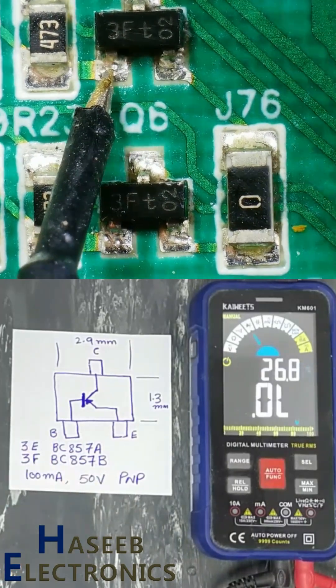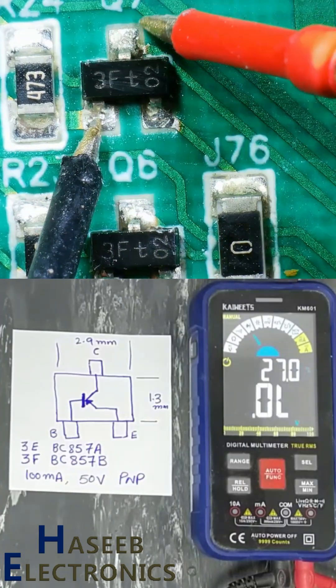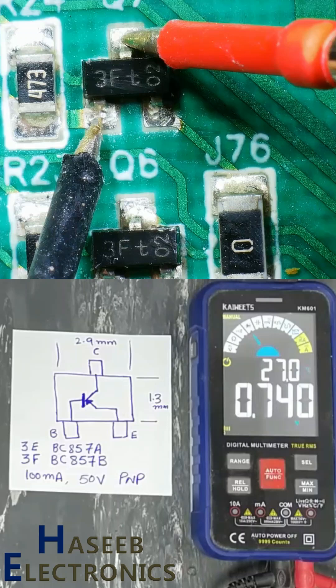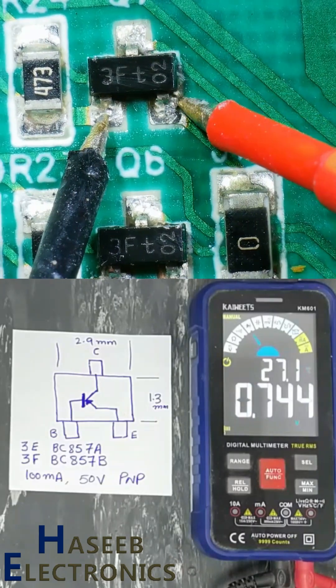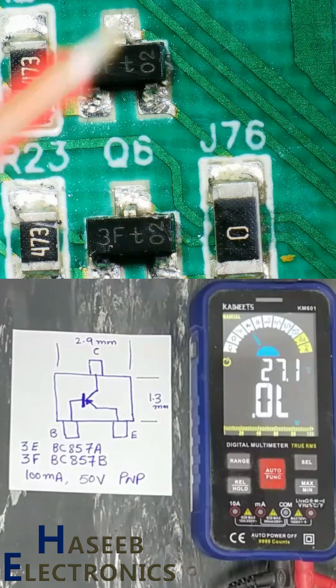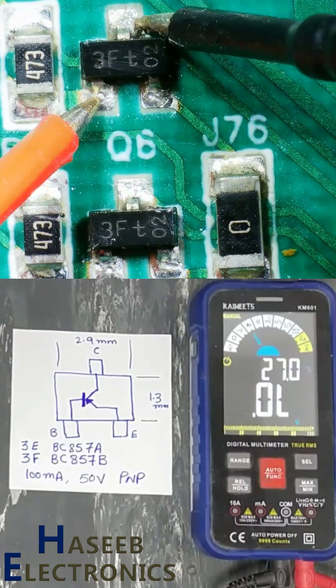0.744, 0.740 - low reading between base to collector. High reading between base to emitter. Reverse the leads: open circuit, open circuit.